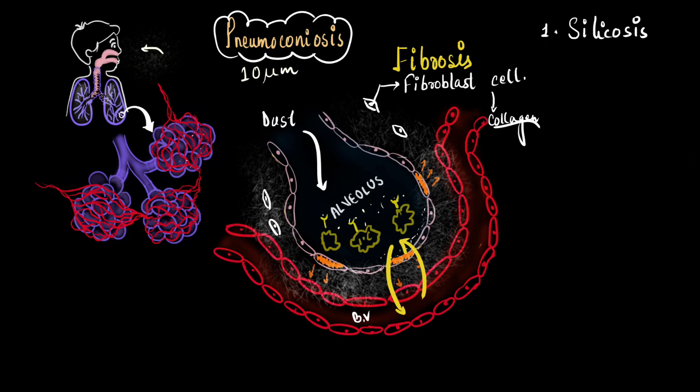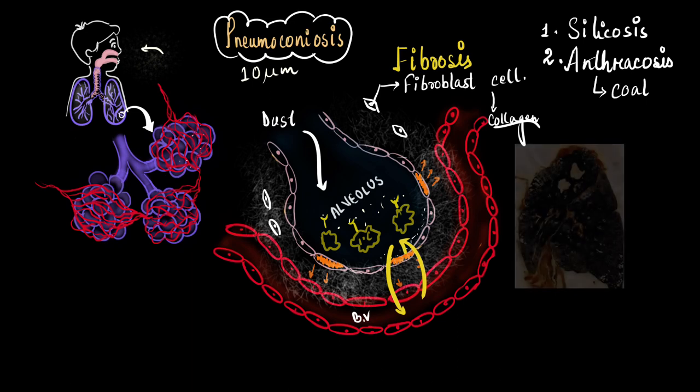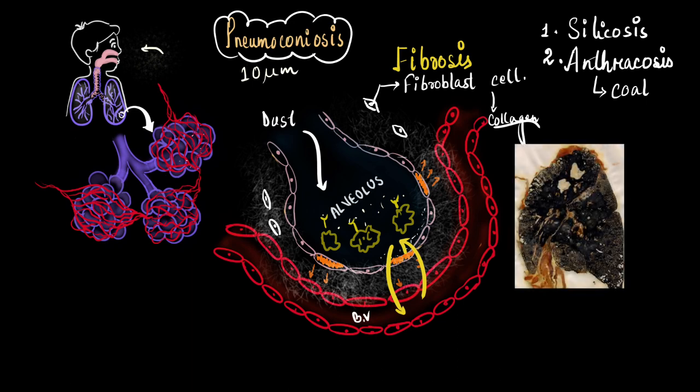Next to silicosis, the most common pneumoconiosis is anthracosis. Anthrac means coal. So, it is a pneumoconiosis due to coal dust. It happens to coal mine workers. It is also called as coal workers pneumoconiosis or the black lung disease because this is what their lungs look like after years of exposure to coal dust.